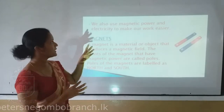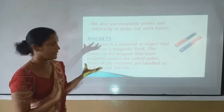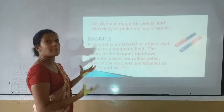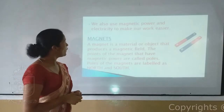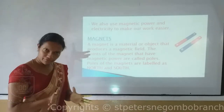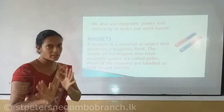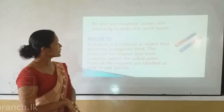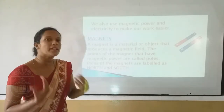Apart from that, nowadays people are also using magnets to make their work easier. What are the things that we can do with magnets? A magnet is a material or an object that produces a magnetic field. It can attach metal things — not non-metal things, only metal things can be attracted by magnets. Using that property, people are using magnets to do many works.